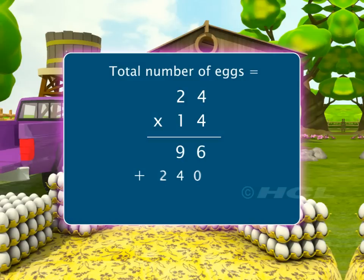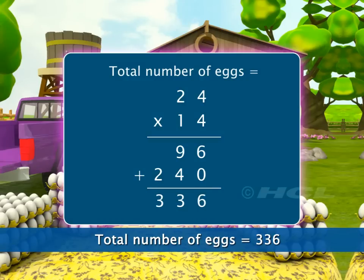Adding 96 and 240, we get 336. So, Sam has 336 eggs in all.